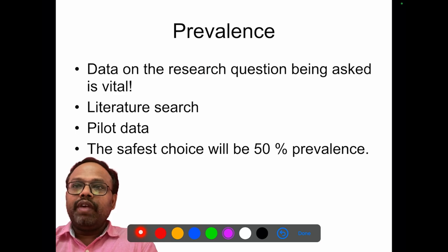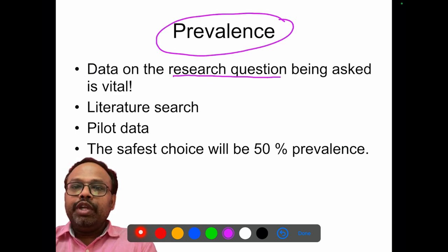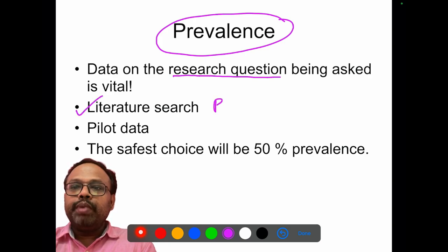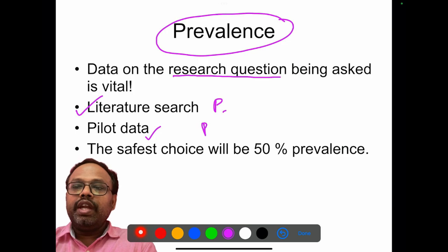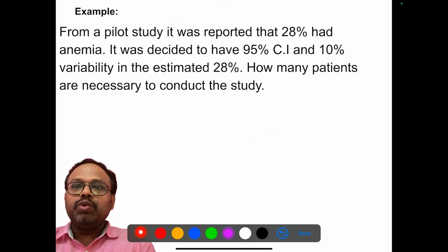How do we get the prevalence? Data on the research question is very vital, and we need to do a thorough review of literature to get P. If after thorough review we have not found P, then we can do a pilot study. If a pilot study is not possible, we can take 50% prevalence, which will yield the maximum sample size.